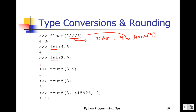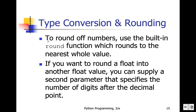So float(22 // 5) is the same as float(4), and the result will be 4.0. But if we just write 22 divided by 5, the result would actually be 4.4. Here we are first doing the integer division, so it gives result 4, and then float converts it to 4.0.